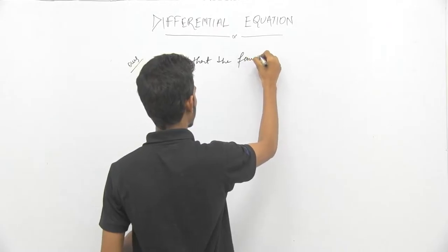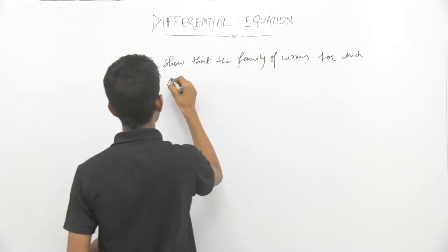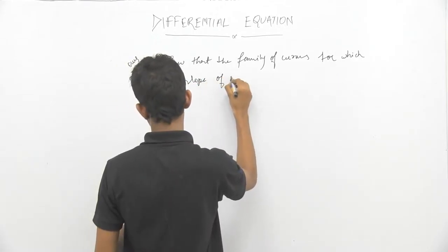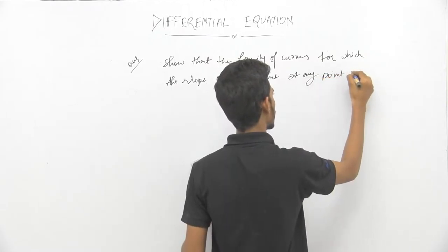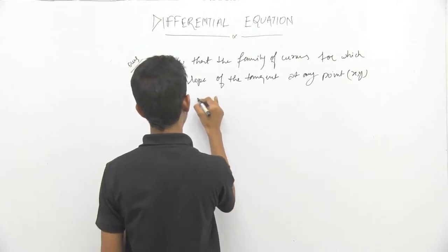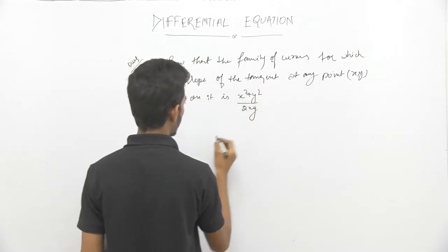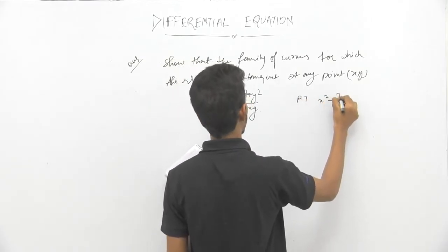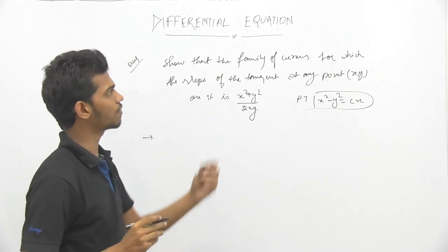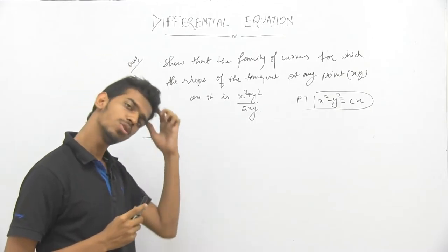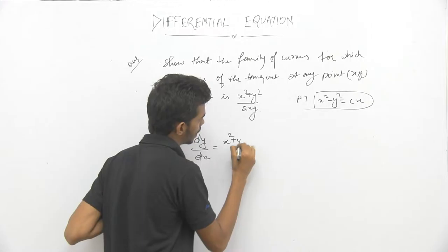The family of curves for which the slope of the tangent at any point (x, y) on it is (x² + y²)/(2xy), and we have to prove that x² - y² = cx. The family of curves for which the slope of the tangent at any point: dy/dx is equal to (x² + y²)/(2xy).